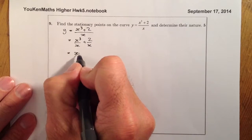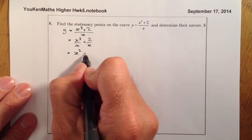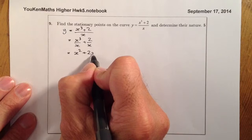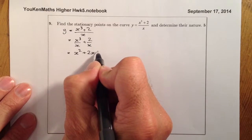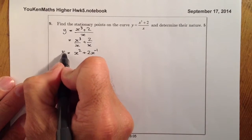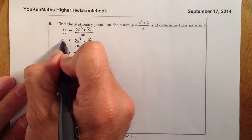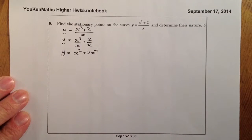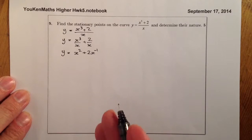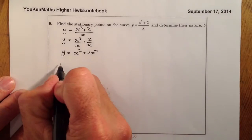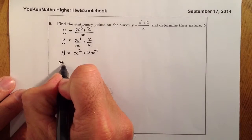So that's going to be x squared, plus 2x to the minus 1. That's me just worked out what y is equal to. I've not differentiated anything yet — I've just prepared it for differentiating.